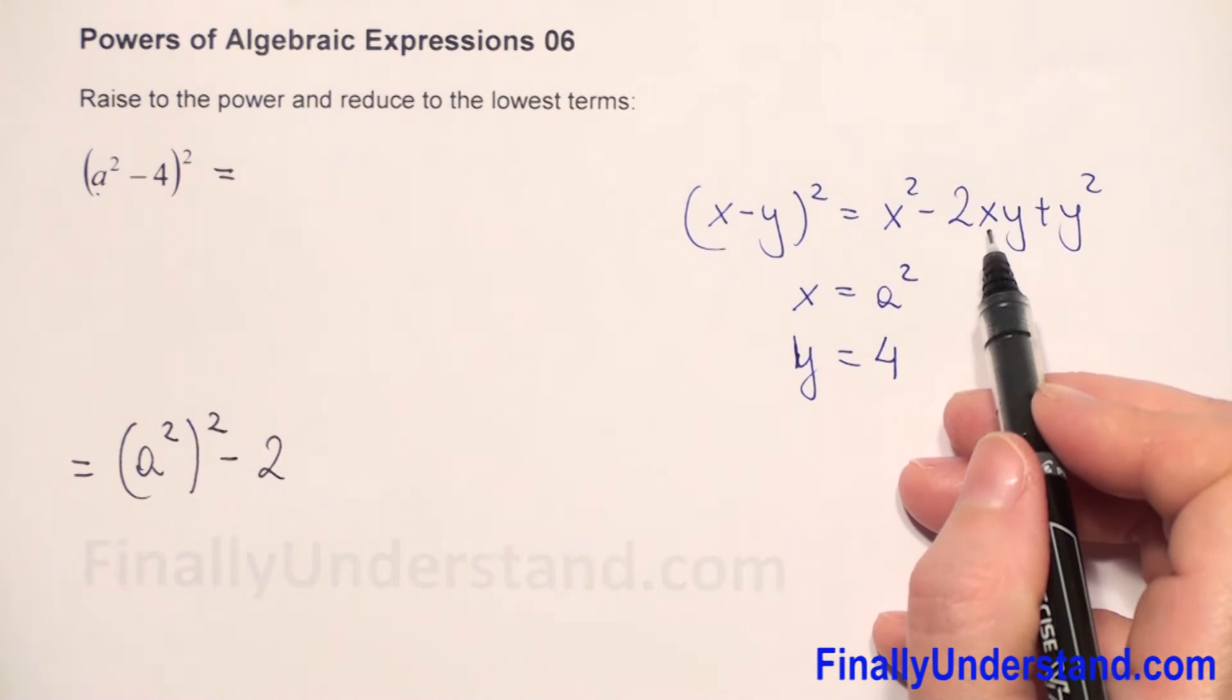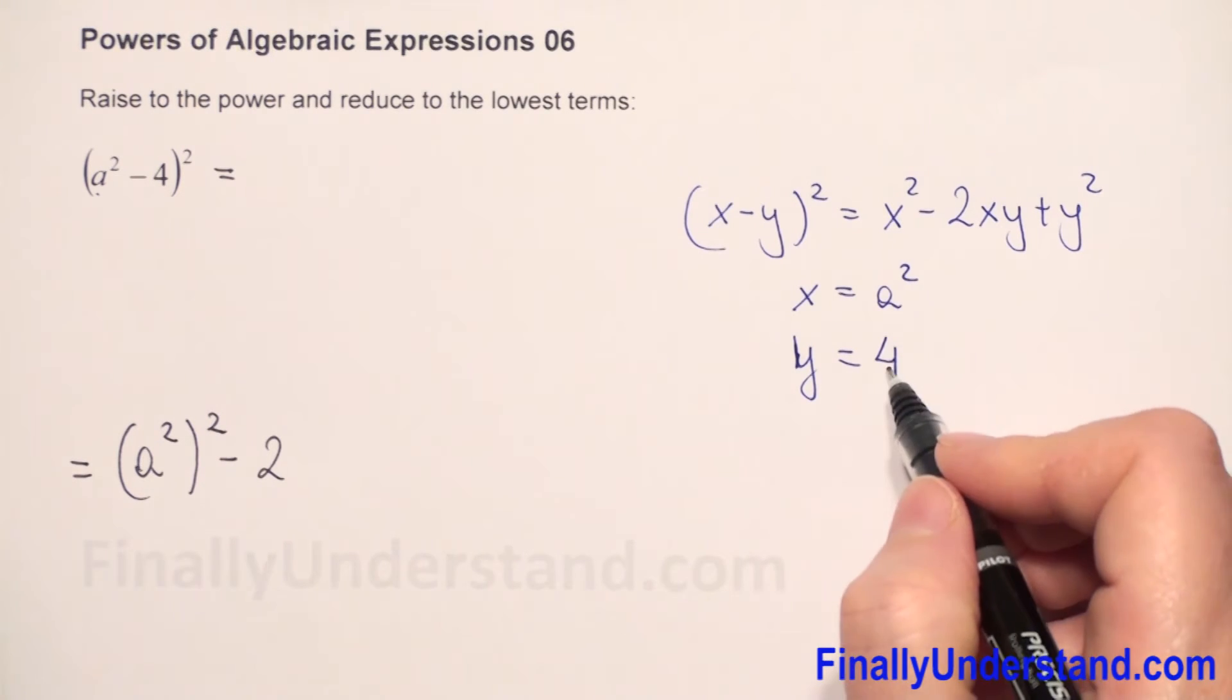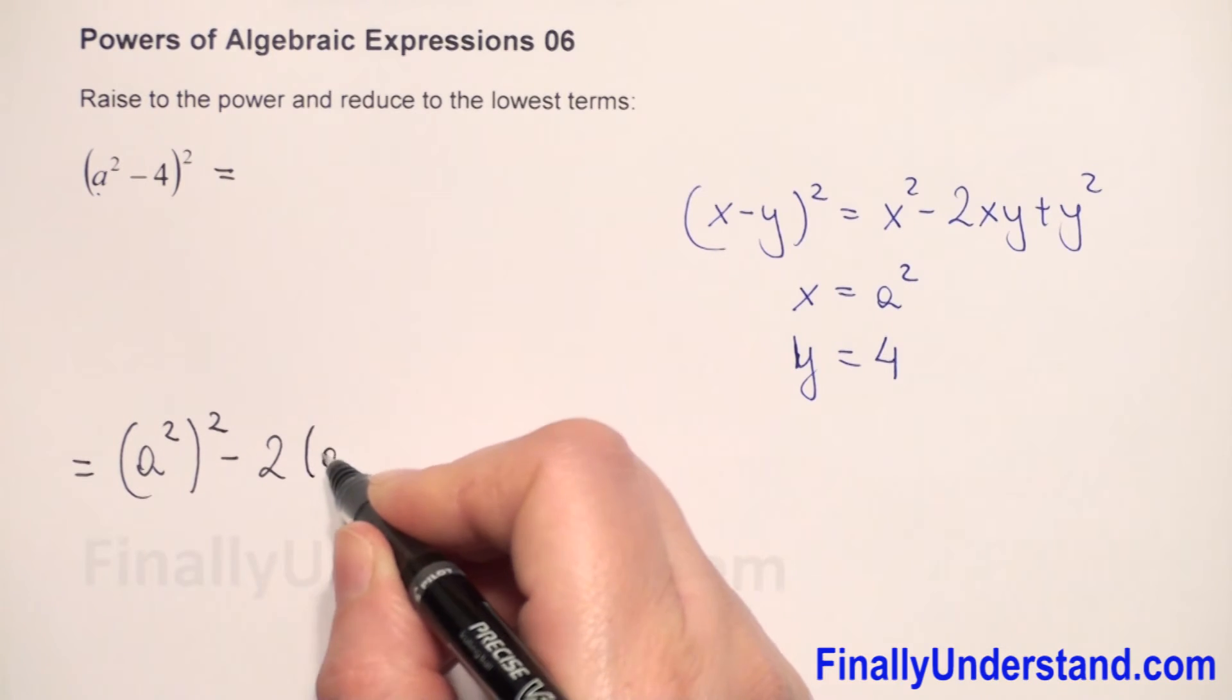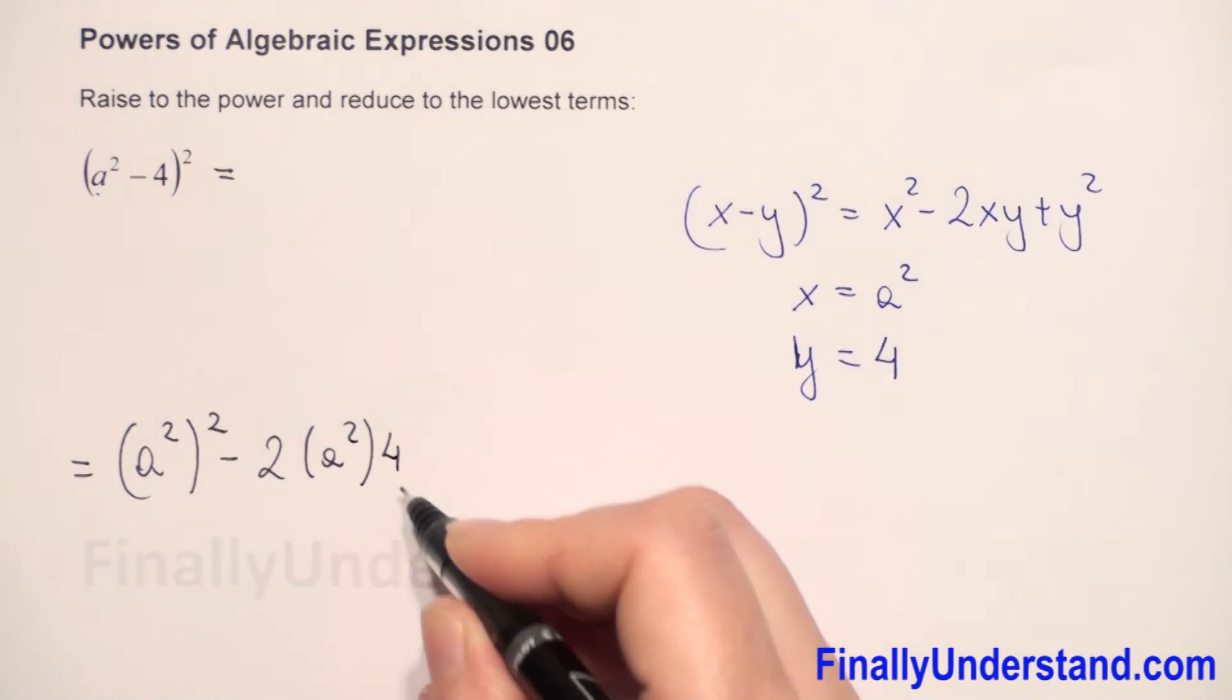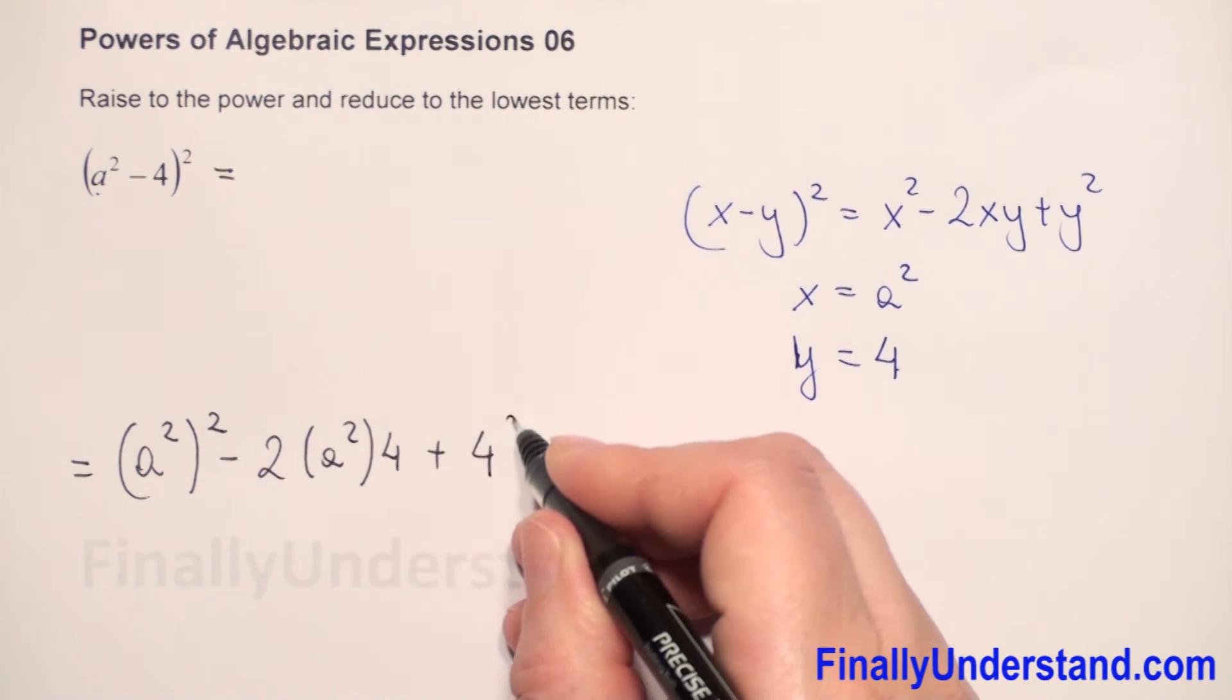We have to multiply x times y, so 4 times a squared, or a squared times 4, it doesn't matter. So we have a squared times 4, plus y squared, so we have 4 to the second power.